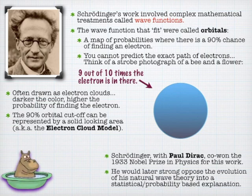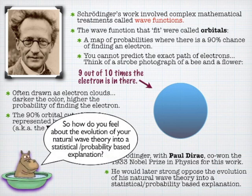Paul Dirac experimentally verified this. Schrödinger joins a long list of people who eventually ended up hating what they discovered — he didn't like the way it got used later in physics.